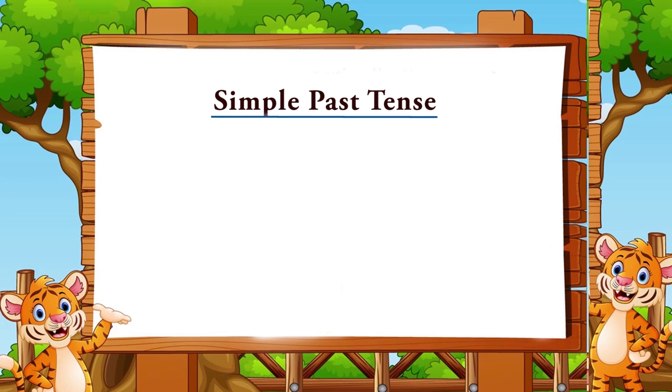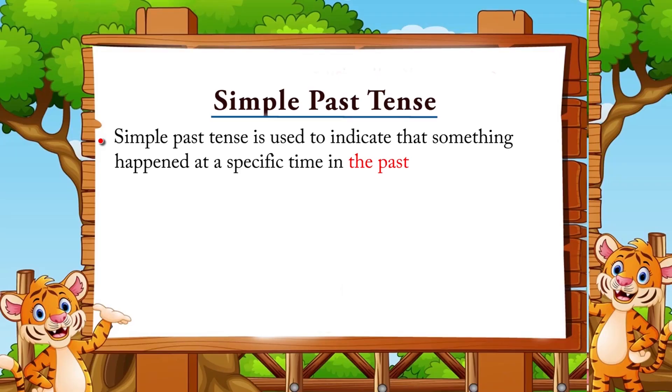Hello students, how are you? Today you are going to learn simple past tense. At the end of this lesson, you will be able to use the appropriate form of the verb used in a simple past sentence and will be able to identify a sentence that describes a past action. Simple past tense is used to indicate that something happened at a specific time in the past.